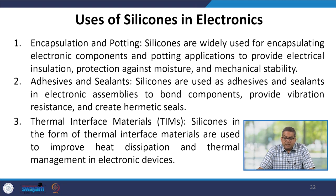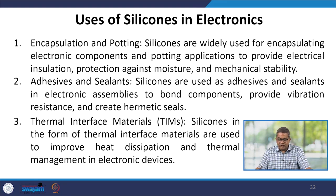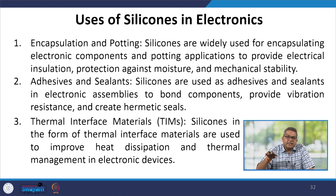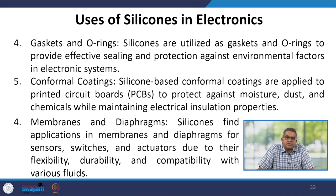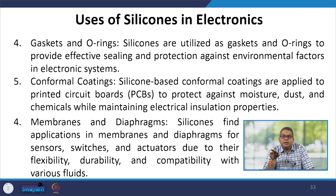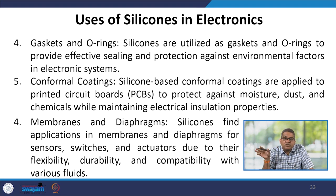Regarding the use of silicones in electronics: for encapsulation and potting, silicones are widely used to provide electrical insulation, protection against moisture and mechanical stability. As adhesives and sealants, silicones bond components, provide vibration resistance and create hermetic seals. As thermal interface materials (TIMs), silicones improve heat dissipation and thermal management in electronic devices. Silicones are also used as gaskets and O-rings for effective sealing. Silicon-based conformal coatings are applied to printed circuit boards to protect against moisture, dust and chemicals while maintaining electrical insulation.